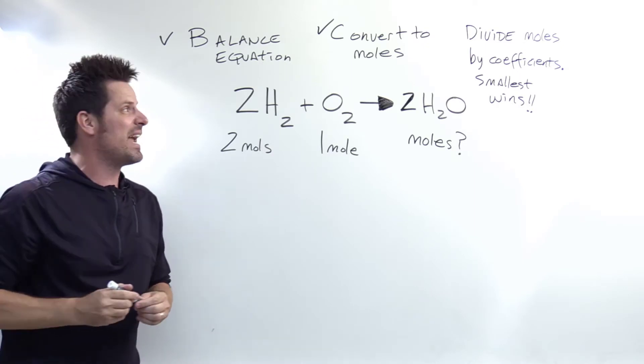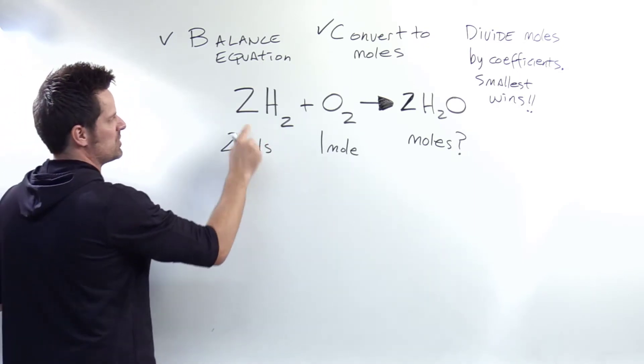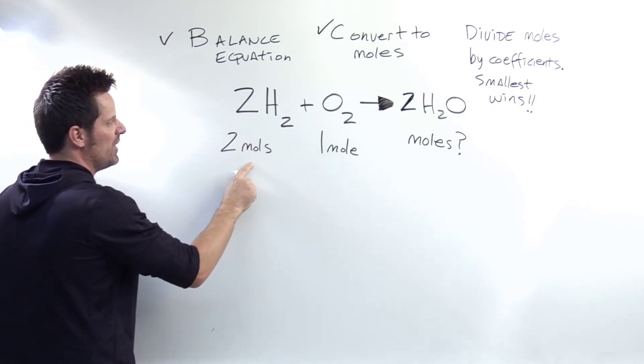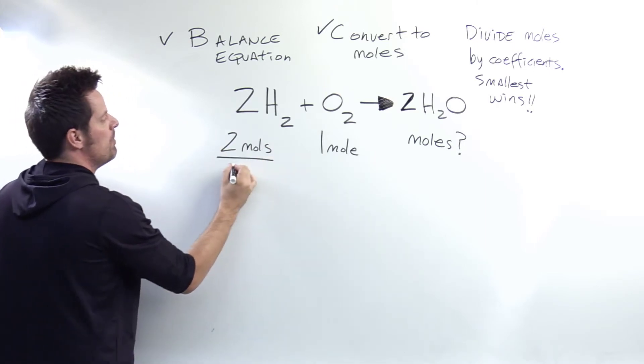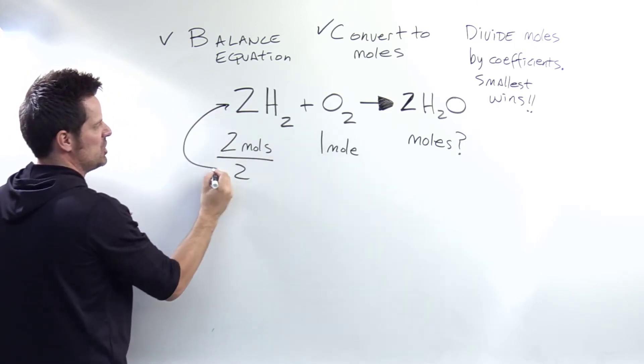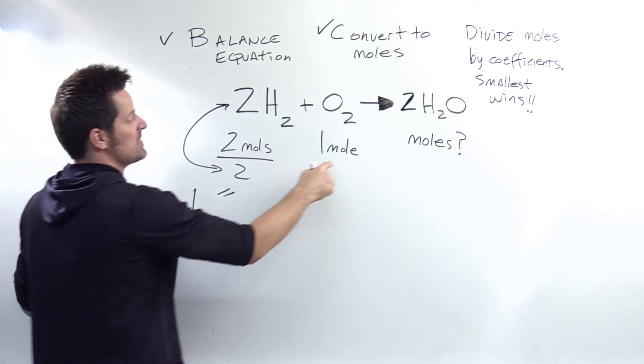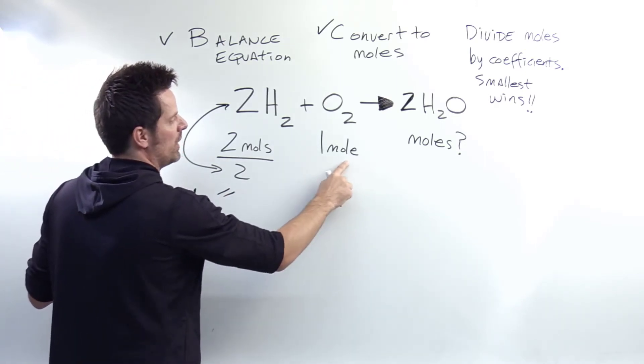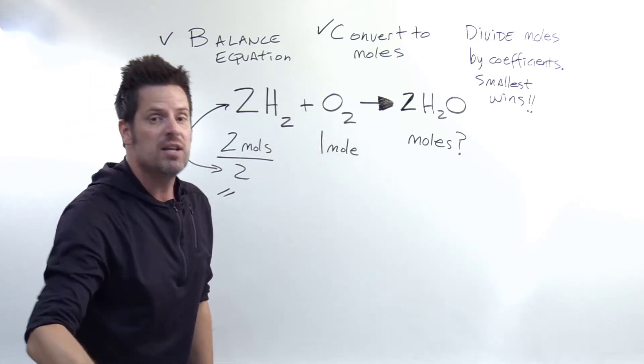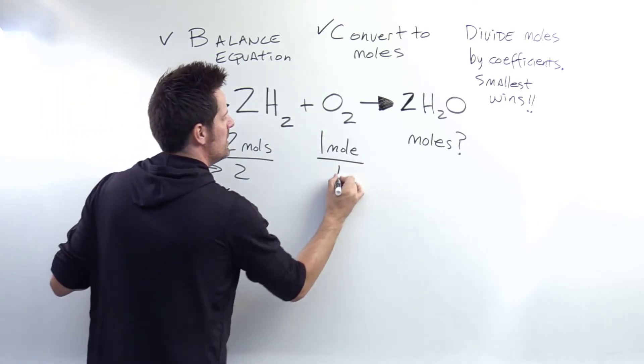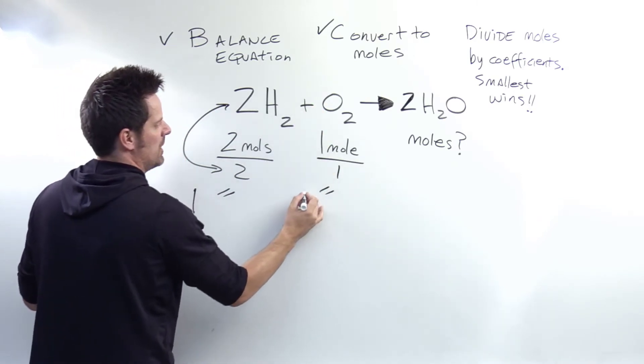Now we have to divide our moles by their corresponding coefficients. Here's the number of moles of hydrogen: two moles. And what is the coefficient tied to the hydrogen? It's a two. So I'm going to divide this two by this coefficient, two. You see what I'm saying? Two divided by two comes to one. Now we do the same thing for the oxygen. I've got one mole here, and what coefficient is next to the oxygen? Well, there's no coefficient written, so it's an implied or understood one. So I'm going to divide one here by the implied or understood one coefficient, and that also comes to one.